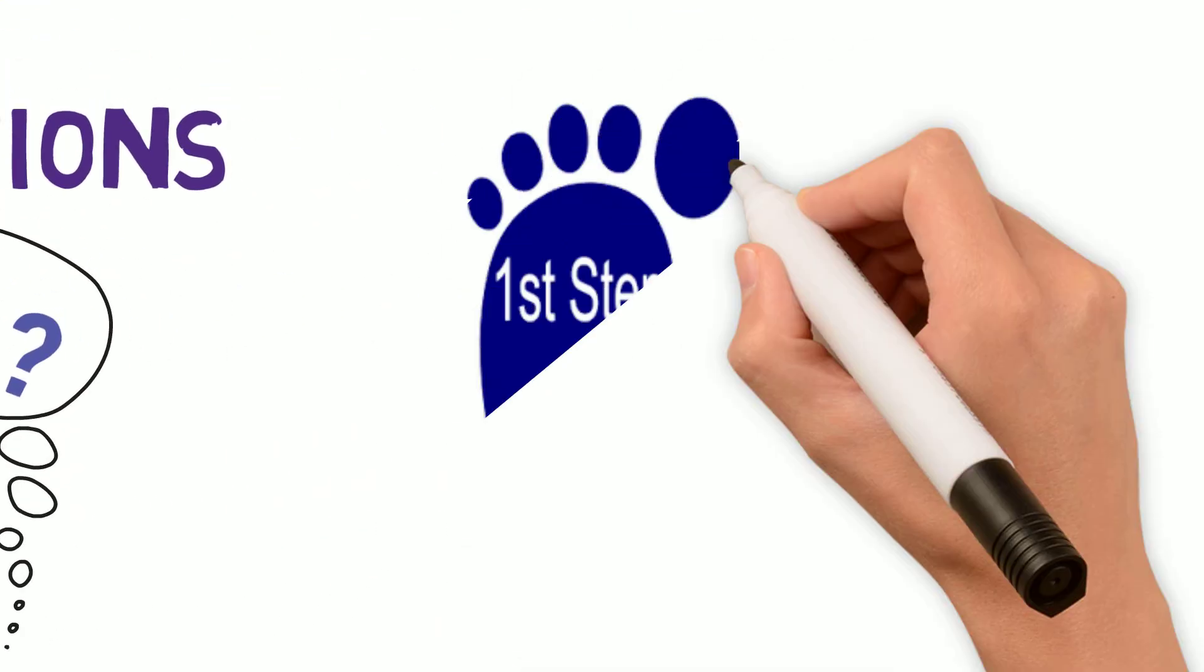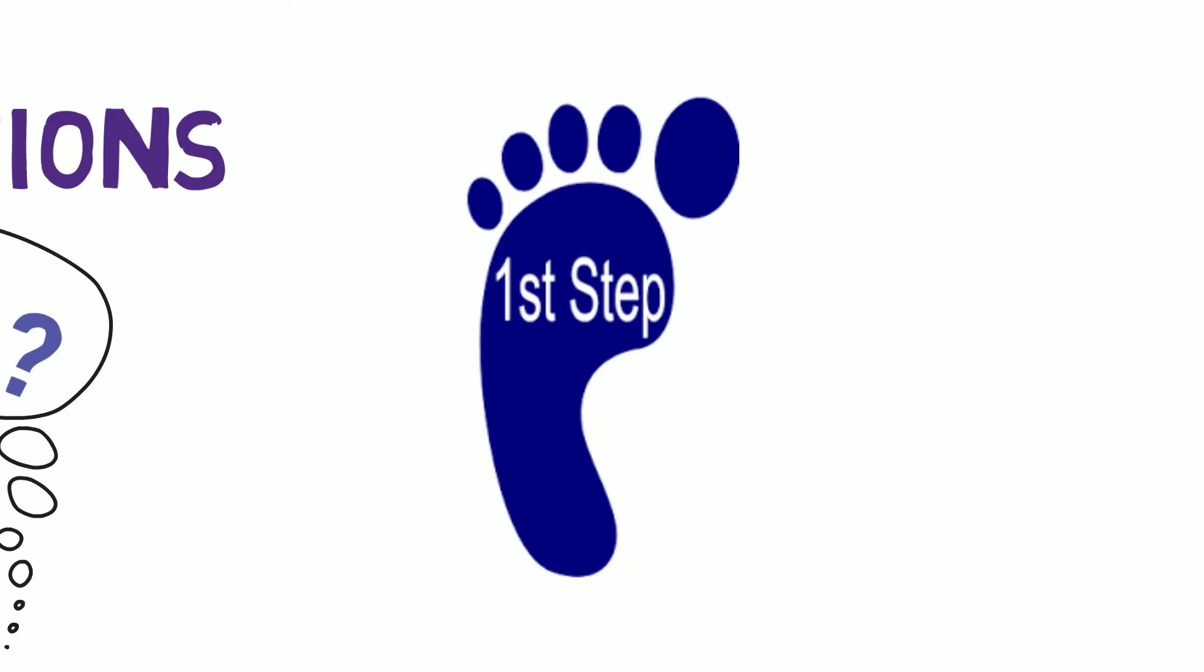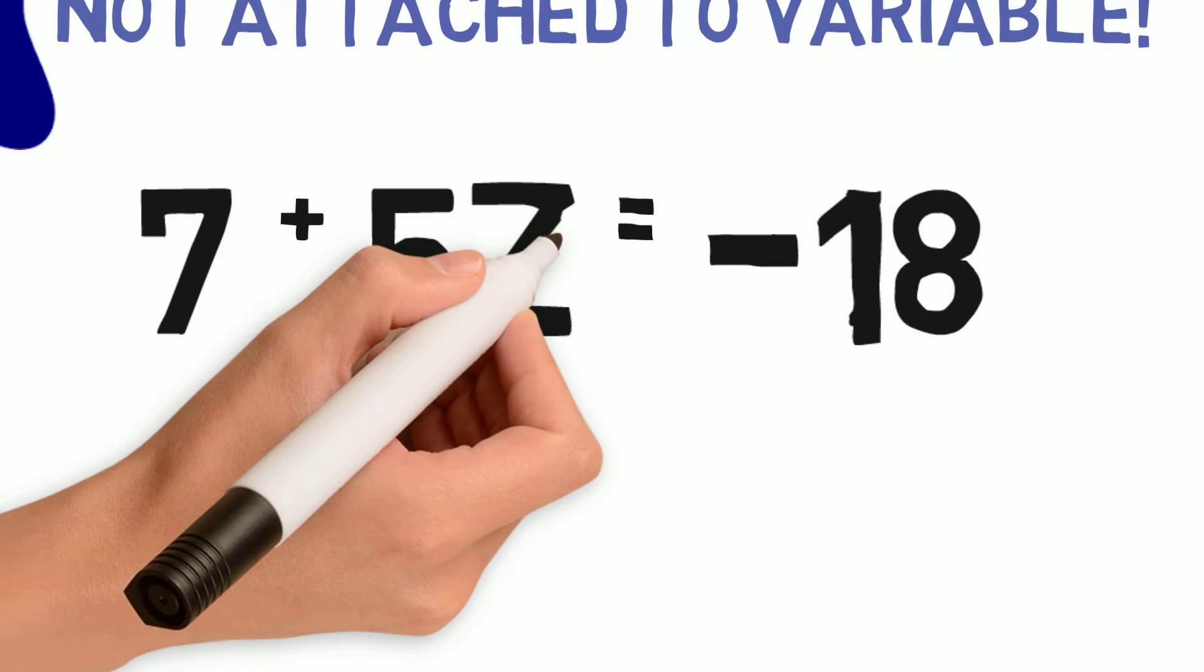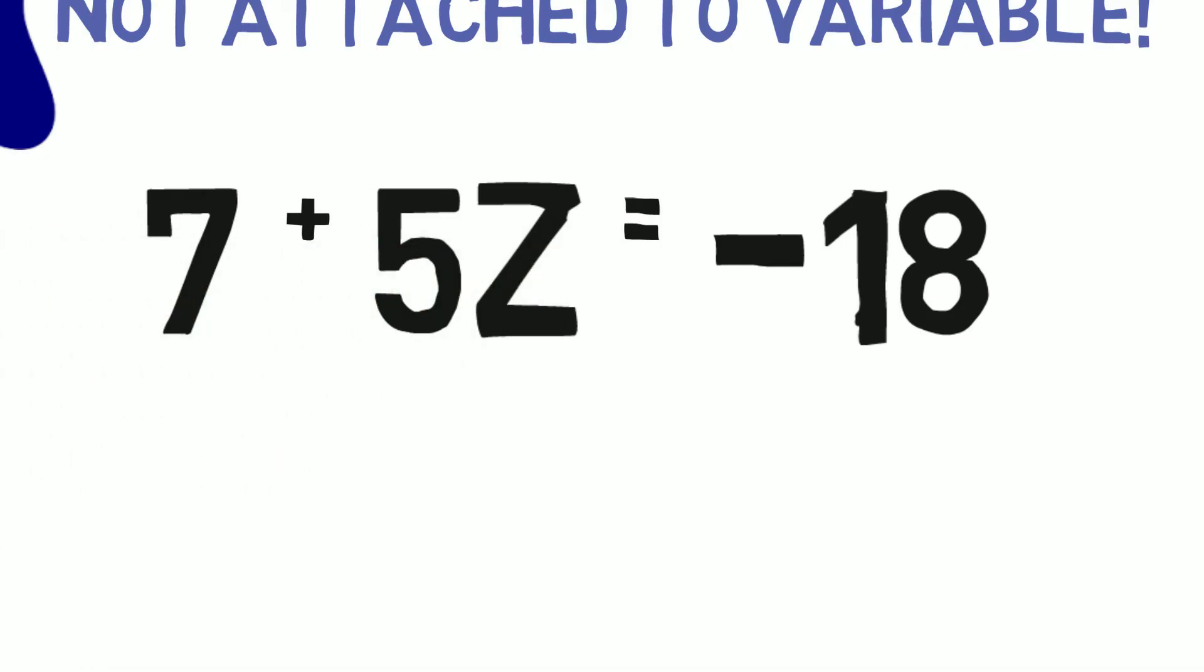So, first step. Usually, we get rid of or cancel out the number not attached to our variable. In the example 7 plus 5z equals negative 18, this number is 7.